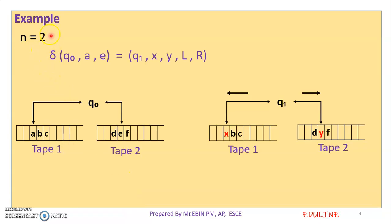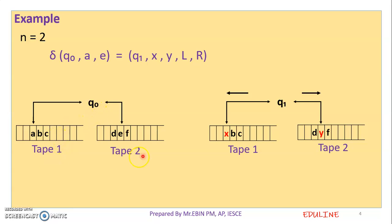Here is an example where N is equal to 2, meaning we have 2 tapes. We have the transition function with states Q0 and Q1. We have a single-tape Turing Machine with heads moving left and right. In Q0 there are two tapes. In the first tape, ABC is the string; in the second tape, DEF is the string.